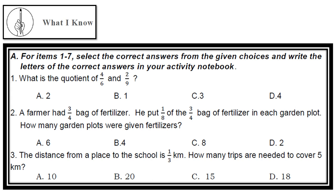Number 3: The distance from a place to the school is one-third kilometer. How many trips are needed to cover 5 kilometers? A. 10, B. 20, C. 15, D. 18.